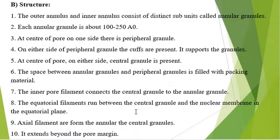Let's move towards the structure. The outer and inner annulus consists of distinct subunits called annular granules. Each annular granule is 100 to 250 angstrom units. At the center of the pore on one side, there is the peripheral granule. On either side, peripheral granules are present, and cuffs support the granules.